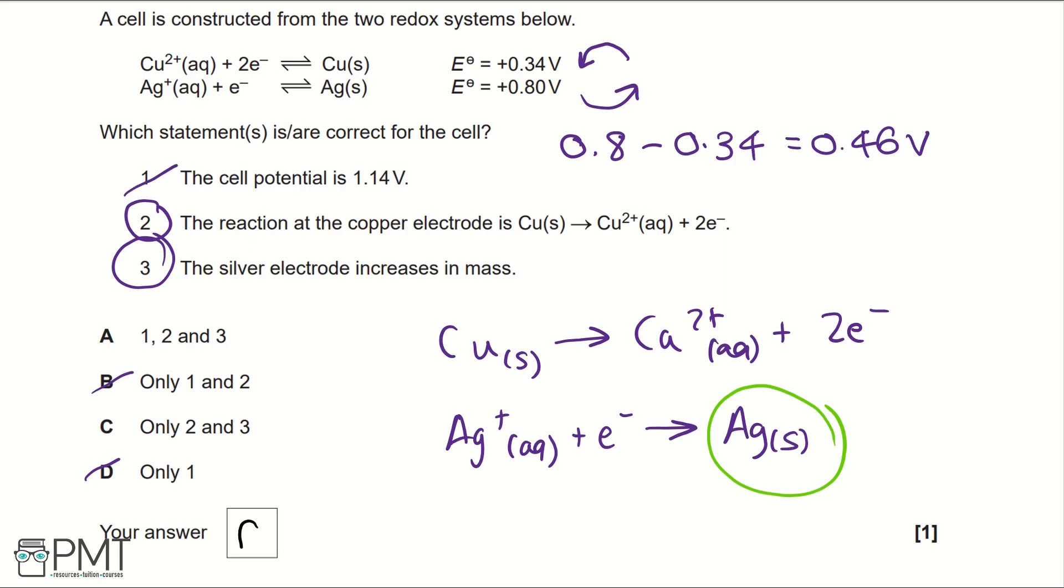The cell potential I've worked out is because 0.8 is going forwards, but the 0.34, we're doing the backwards or the reverse of this, so it's negative. Therefore, our cell potential will be smaller. The 1.14 is if you add them, but that's not what we're doing - that's not correct. To get the mark for this question, you need to write C in the answer box.